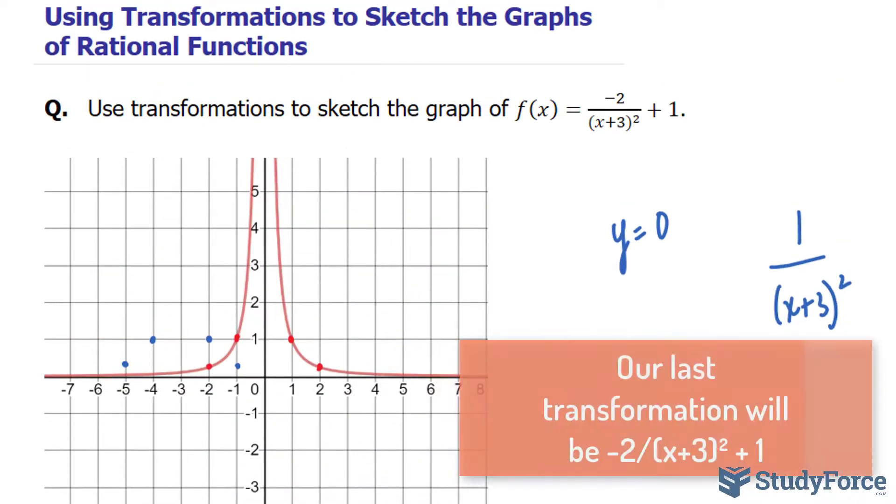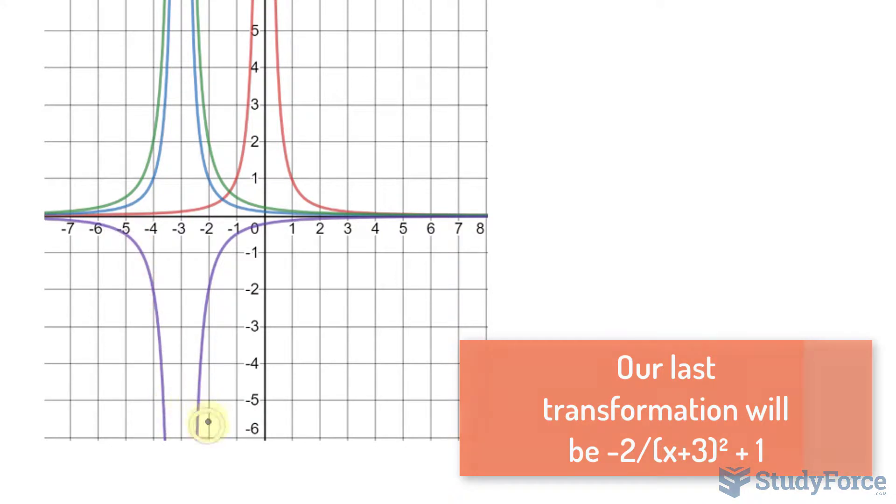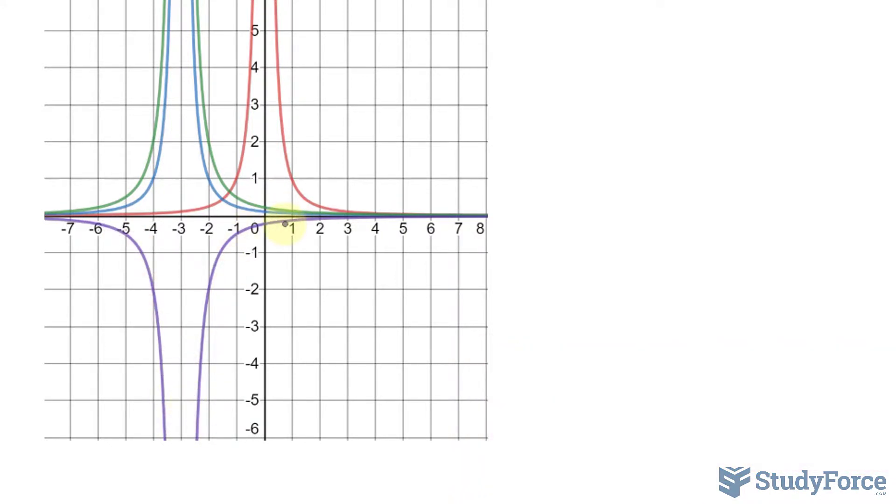Okay, now we're on to our last transformation, being this plus 1. This plus 1 will shift all the y outputs along this purple curve up by 1. This will change the horizontal asymptote from being y equals 0 to y equals 1, because everything gets shifted up. Let's take two reference points. That goes up. Now it's there. This point goes up, and you would have something. Let me try to connect these.